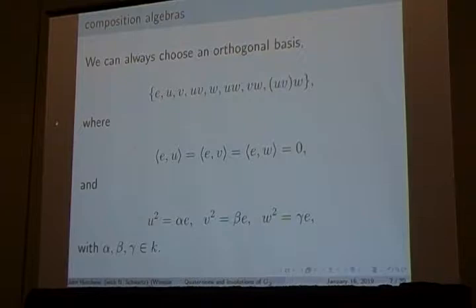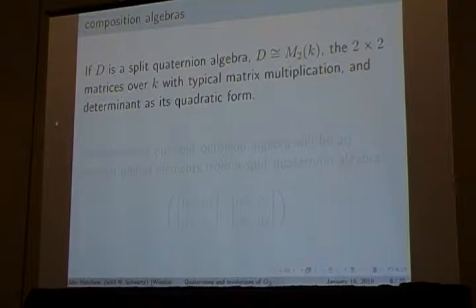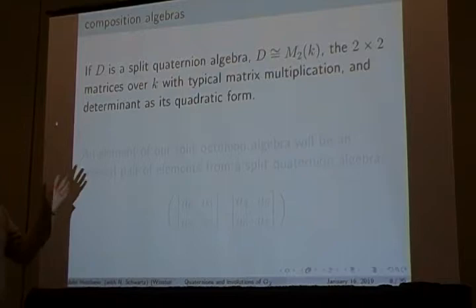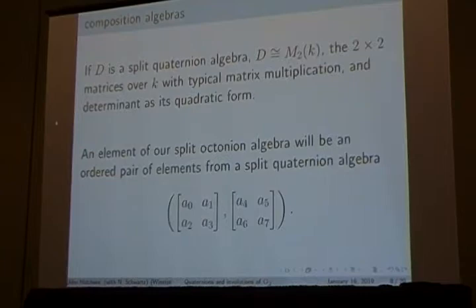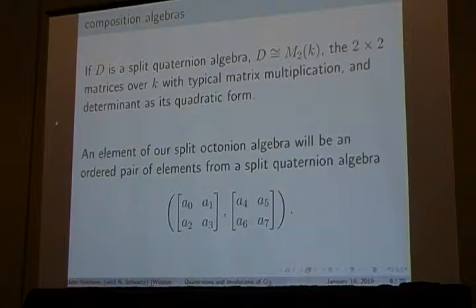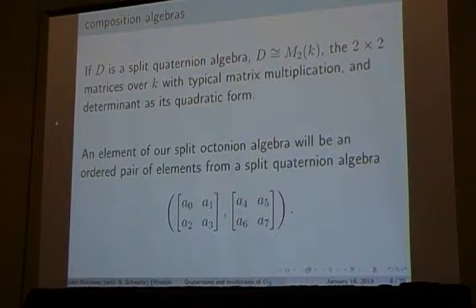We have an orthogonal basis, and these elements squared give some multiple of the identity — they generate the octonion. We're only doing this for split types of G2, so all of our octonions are going to be split. We can always construct a split octonion algebra by doubling a split quaternion algebra. The split quaternions are isomorphic to M2(K). So we can choose a basis for the octonion as a pair of two-by-two matrices. The norm can be chosen as the determinant of the first matrix minus the determinant of the second matrix, which gives a quick way to check if a quaternion subalgebra is split or not.